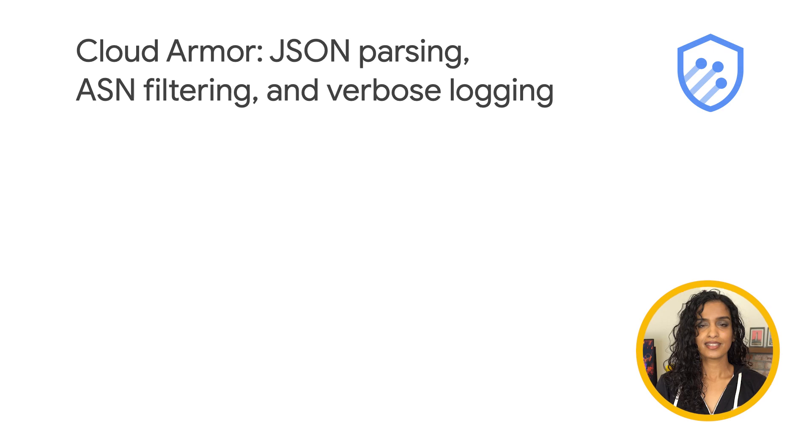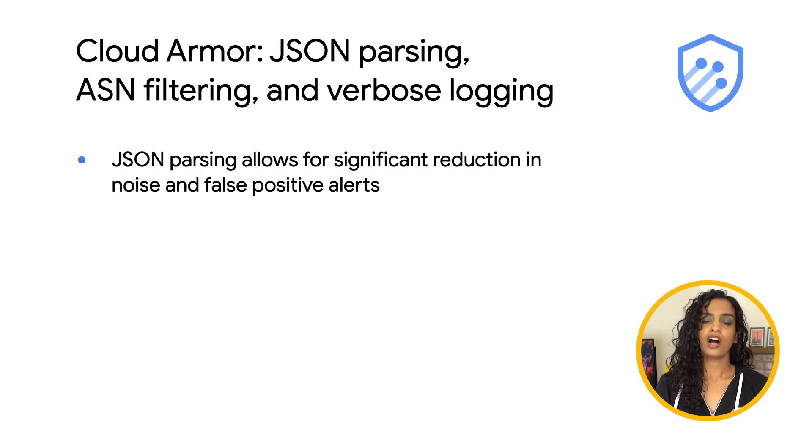Cloud Armor also launched the capabilities to parse JSONs, filter based on ASN, and enable verbose logging. Incoming requests with JSON as the content type often report a high rate of noise and false positive hits from pre-configured WAF rules. With this release, you can now enable Cloud Armor to parse the JSON formatted content of HTTP requests on a per policy basis.